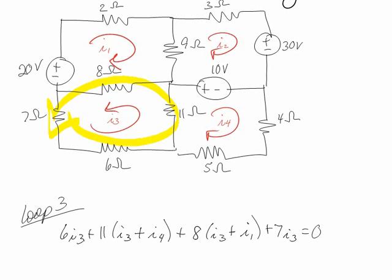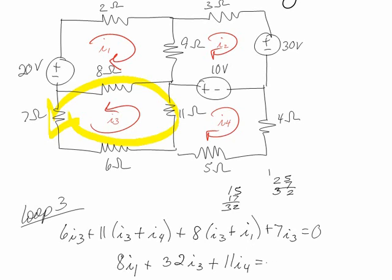Alright, now I have to add — this is the hard part. I1, and then 6 and 17... it's 25, and 25 plus 7 is 32. Let me make sure I get that same answer: 15 plus 17, yep that's clearly 32. Even math geniuses have trouble with addition sometimes. So I have 8I1 plus 32I3 plus 11I4, and that equals 0.